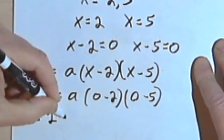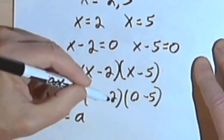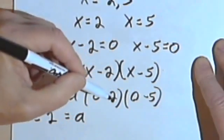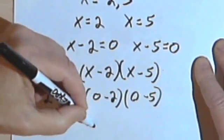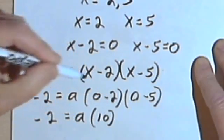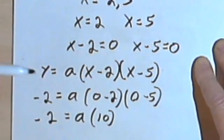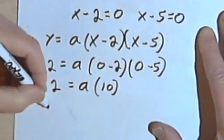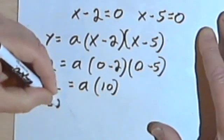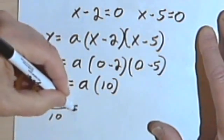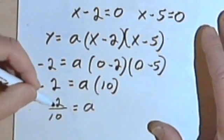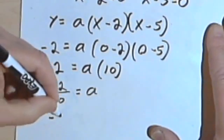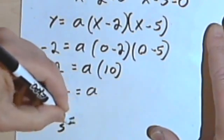Okay, so negative 2 equals a times... well, 0 minus 2 is negative 2, and 0 minus 5 is negative 5. So what I'm doing is multiplying negative 2 times negative 5, and that's going to be a positive 10. So negative 2 equals a times 10, or 10a. And then I'll divide both sides by 10. So I'm going to have negative 2 over 10 equals a. And I'll reduce that negative 2 over 10, so that's going to just be negative 1 fifth. Negative 1 fifth is a.